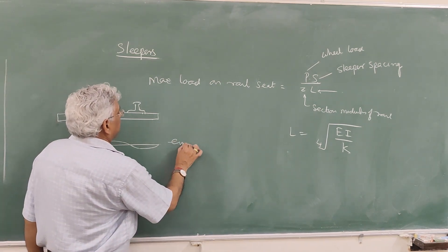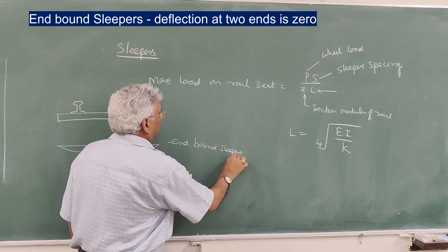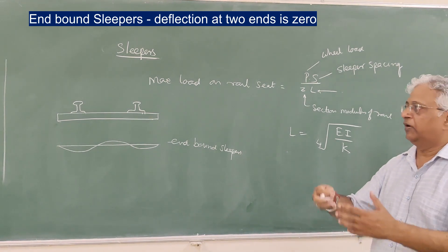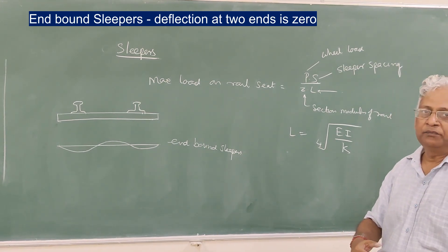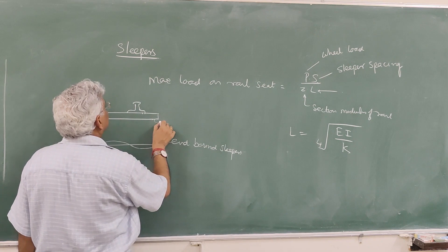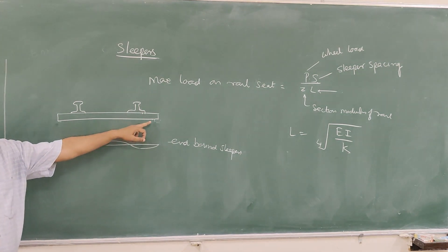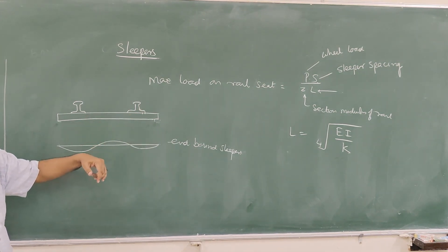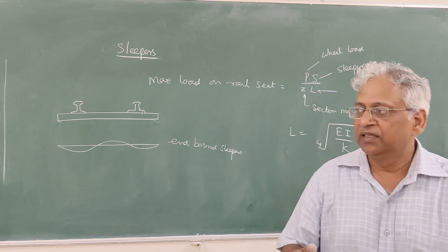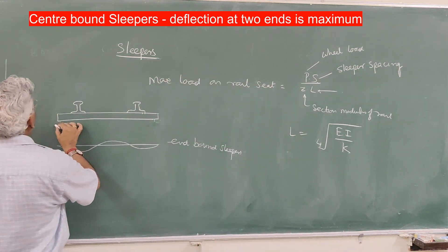Now these are called end-bound sleepers, because sleepers are firmly supported at the ends. Due to passage of the train, because of vibrations in the track and the cohesionless property of the ballast, the support at ends starts to loosen. It becomes loose, and after certain passages of the train, the ballast at the ends of the sleeper gets loose.